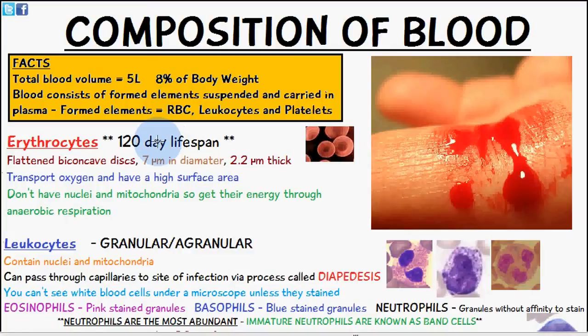Blood contains formed elements which are suspended and carried in plasma. These formed elements are red blood cells, otherwise known as erythrocytes, leukocytes, and platelets.